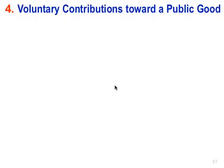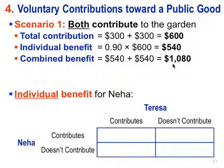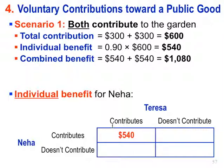Now the question asks you to look at the individual benefit for Neha. It gives a similar matrix but now focuses on just the individual benefit for Neha for each of the four scenarios. In scenario one, where both contribute, instead of putting in $1,080 as the combined benefit, we're putting in the individual benefit for Neha — which happens to be $540, the individual benefit if both Neha and Teresa contribute to the garden.